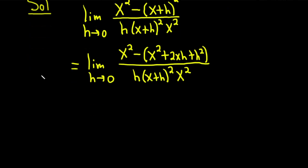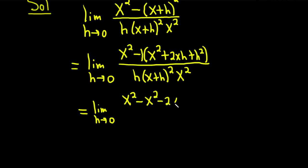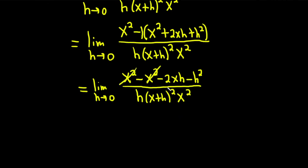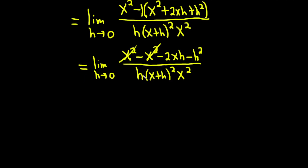In the next step, we distribute the minus 1. This is the limit as h approaches 0 of: x squared, then minus 1 times x squared is minus x squared, minus 1 times 2xh is minus 2xh, and minus 1 times h squared is minus h squared. All of this is being divided by h times (x+h) squared times x squared. The x squared terms cancel.